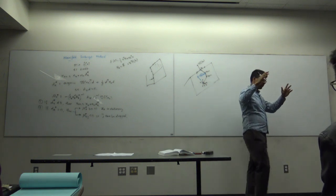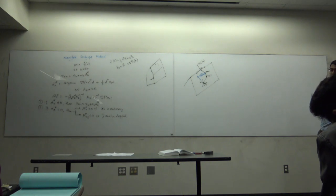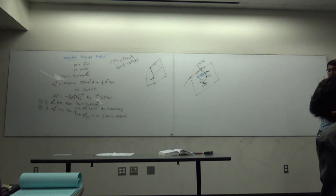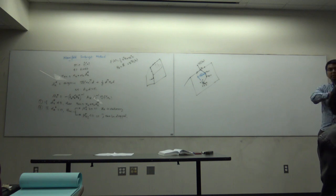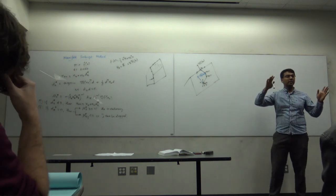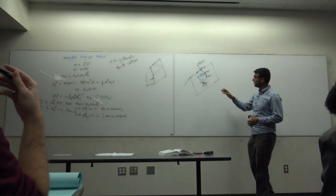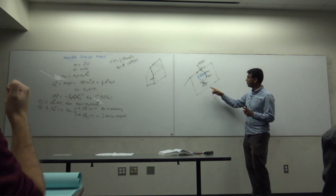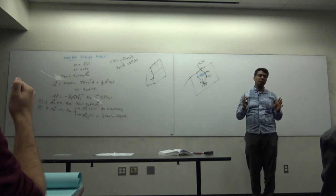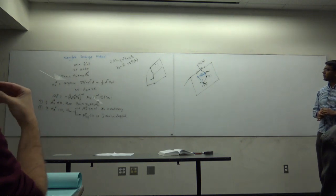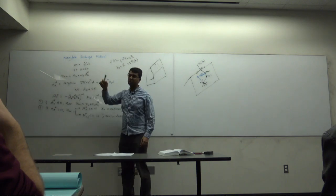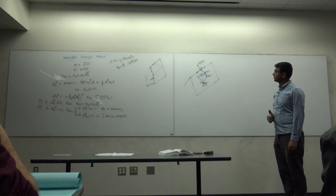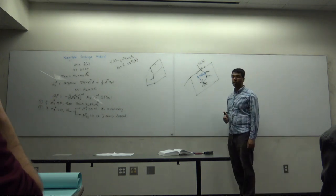Imagine you are on a convex set on the edge, going along the edge until the derivative of the function becomes normal to that direction. Then you remove one active constraint and slide along another surface until the derivative becomes normal to that surface, then start going inside the set. In n dimensions you keep doing this again and again until you hit the optimal point. Since you are always descending at every point, you are guaranteed to reach a stationary point, and if f is convex you will converge to the globally optimal solution. That's the idea behind the manifold sub-optimization method.